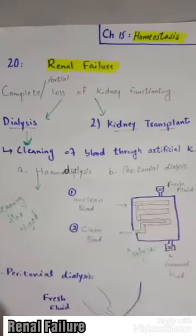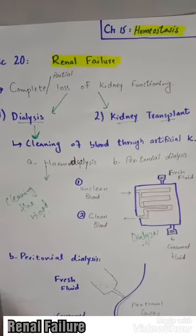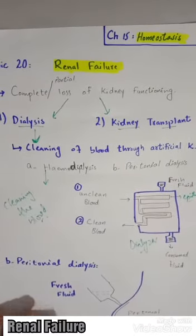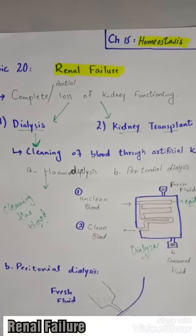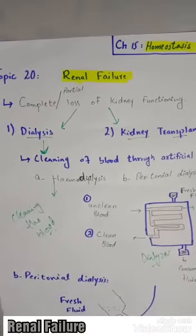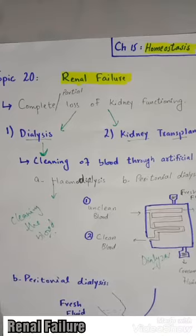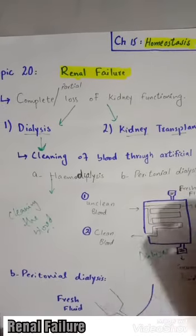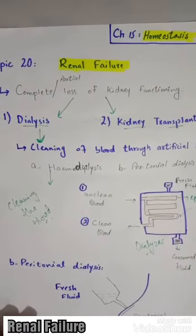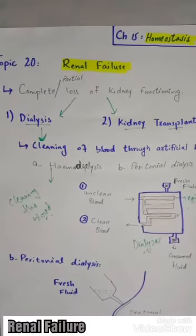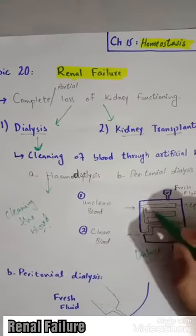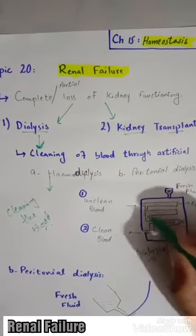The dialyzer contains tubules lined with epithelial membrane. The tubules carry the patient's blood. The dialyzer has two compartments — the tubular part containing the patient's blood, which has a high amount of nitrogenous waste and metabolites, and the surrounding fluid compartment.